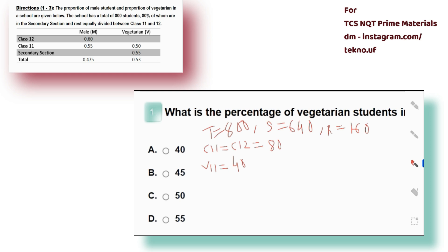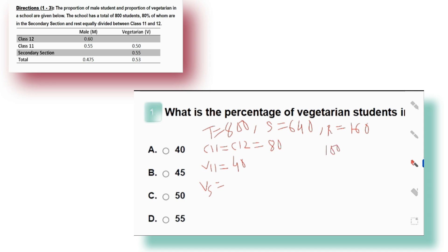To quickly calculate 55 percent of 640: 100 percent of 640 is 640, 50 percent is 320, and 5 percent is just remove one zero — so 32. Therefore 55 percent equals 320 plus 32, which is 352. So 352 is the total number of vegetarians in the secondary section.